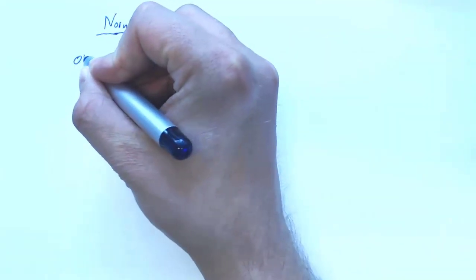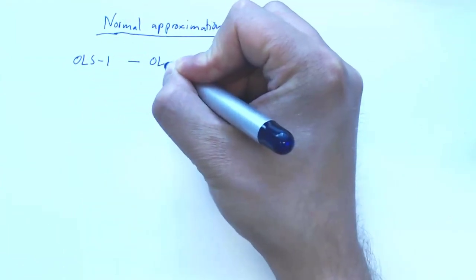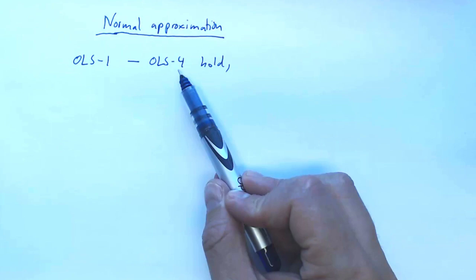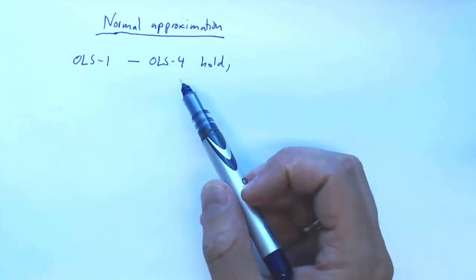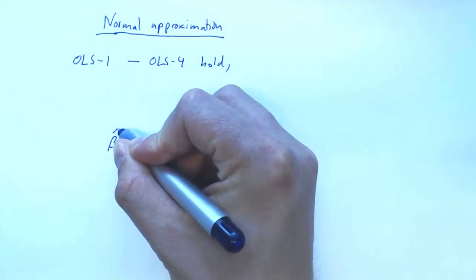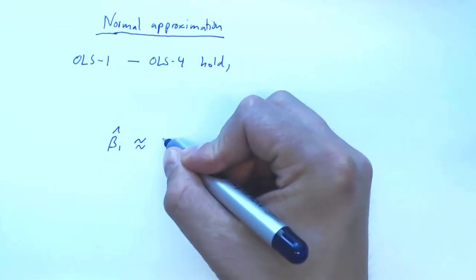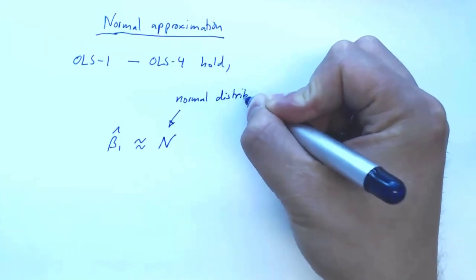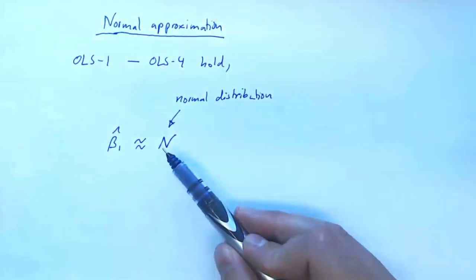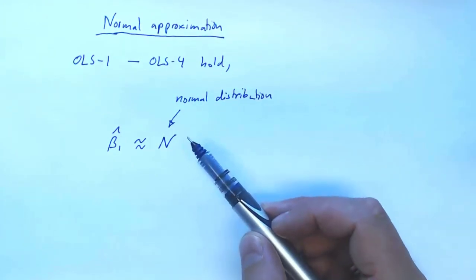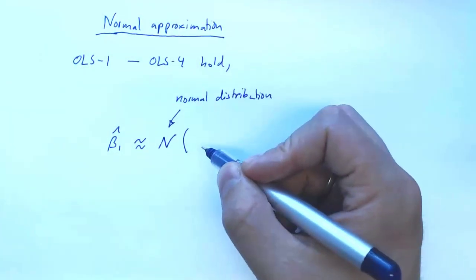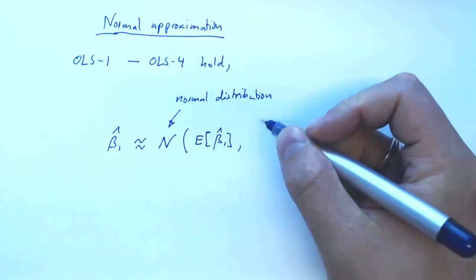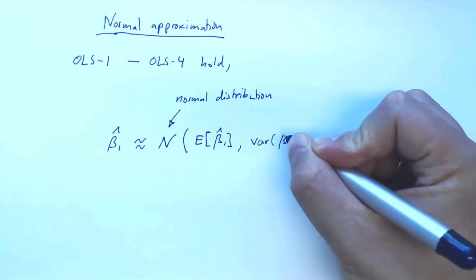If we assume that assumptions OLS1 through OLS4 hold — note that OLS5, the homoscedasticity assumption, is not needed for this — then beta 1 hat will have approximately a normal distribution. A normal distribution is parameterized by two parameters corresponding to its expectation and its variance. So beta 1 hat is approximately N(E[beta 1 hat], Var(beta 1 hat)).